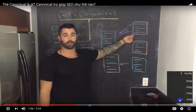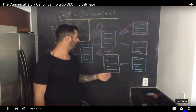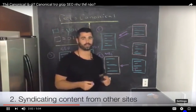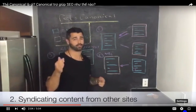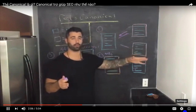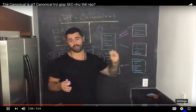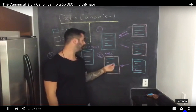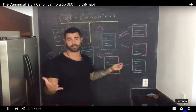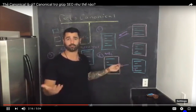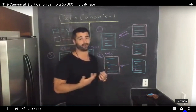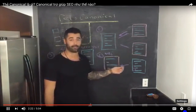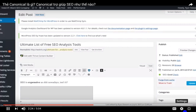You can actually rip content verbatim from other sites — and that's what we're going to talk about in the second scenario. Sites are allowed to syndicate content from other sites as long as you use a canonical tag that points back to the original source, because that tells Google that you syndicated that content and this is the original source. I've used this before because I do a lot of guest blogging for big sites and I write really good content that I'd like to share with my own personal audience.